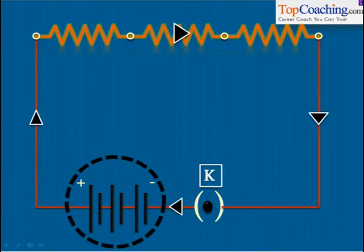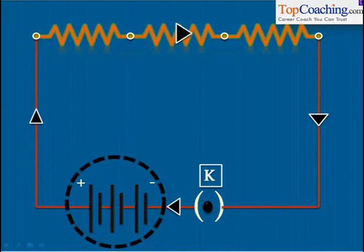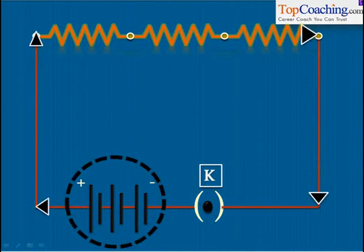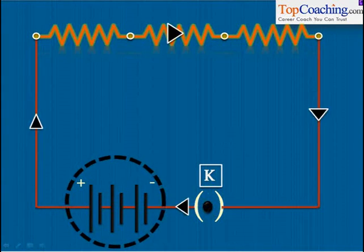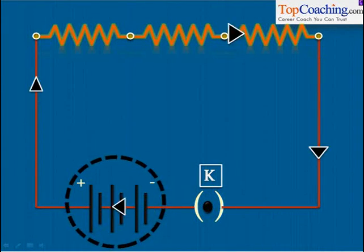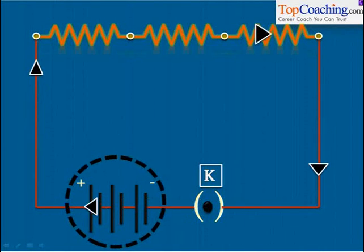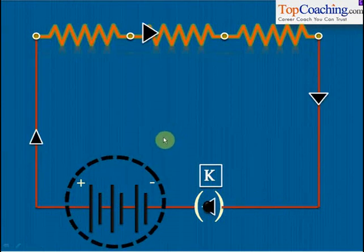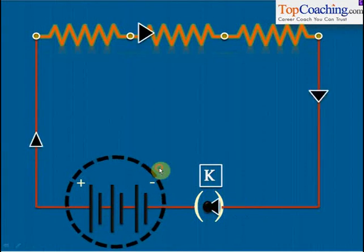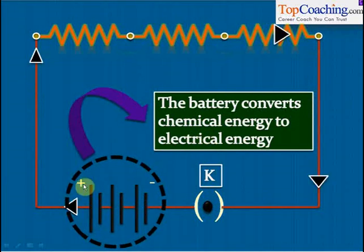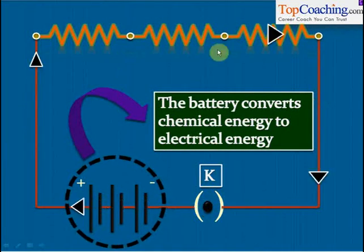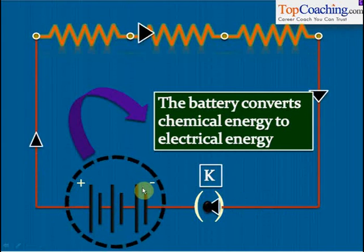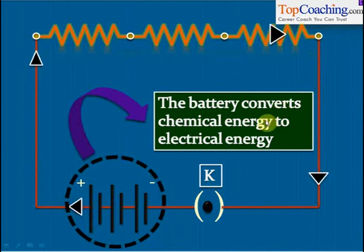Now let's start with the basics. This is a circuit shown on your screen — there is a battery, there is a key, and current is flowing through the circuit. There is a resistance in the circuit also. What happens inside the battery is that chemical reactions take place, and these chemical reactions produce electricity. So basically the chemical energy inside the battery gets converted to electrical energy, and it's this electrical energy that's moving the electrons.